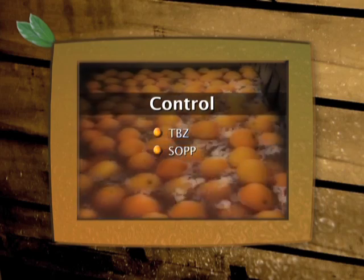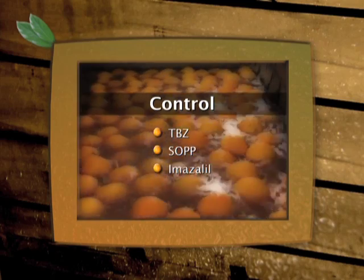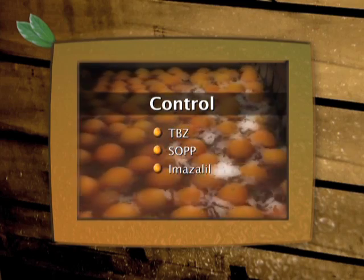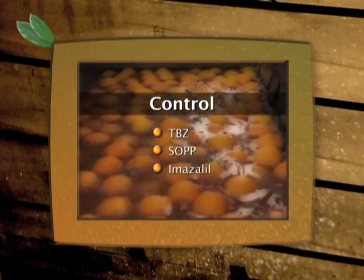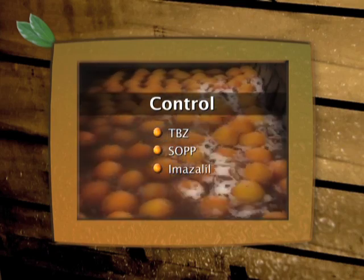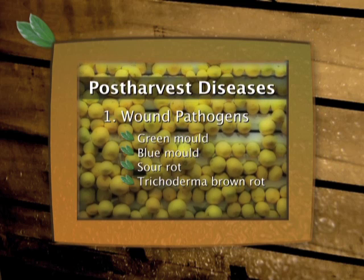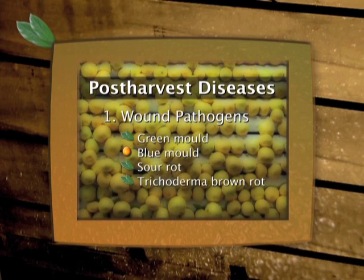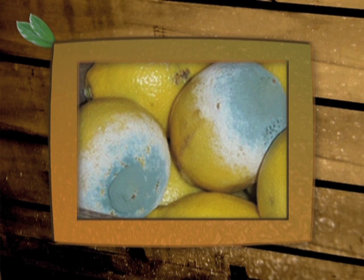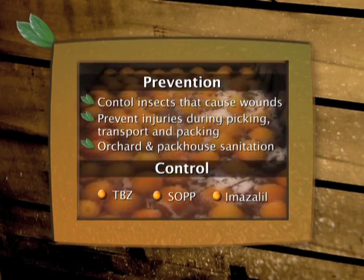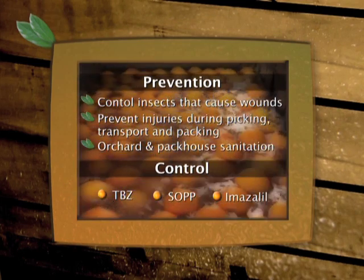Thiabendazole, SOPP and imazolol, or combinations of these fungicides, can be used as fungicide treatment in the packhouse to control green mould. Blue mould also infects fruit through wounds and injuries, just like green mould, but blue mould can spread from infected fruit to other fruit in a packed carton. Blue mould is prevented and controlled in the same way as green mould.